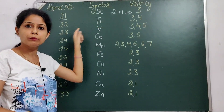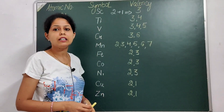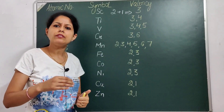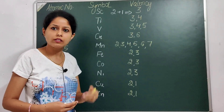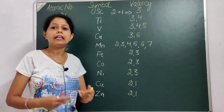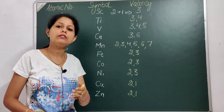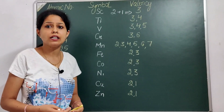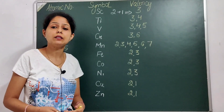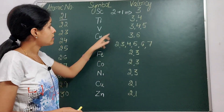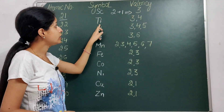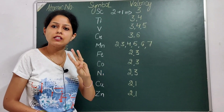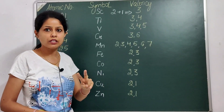Next comes Titanium, with atomic number 22. In Titanium's case, you increase the valency by one number. If you remember that Scandium's valency is 3, then Titanium has 2 valencies: one is 3 and the other is 4. This is because transition elements show variable valency, which means they show more than one valence. So Titanium's valencies are 3 and 4.